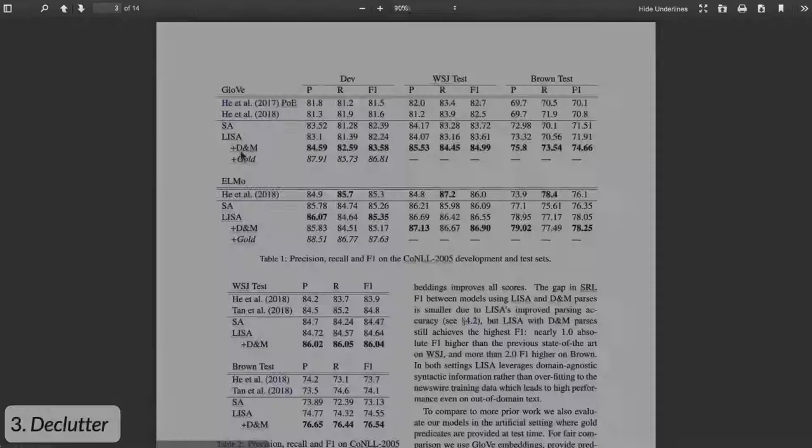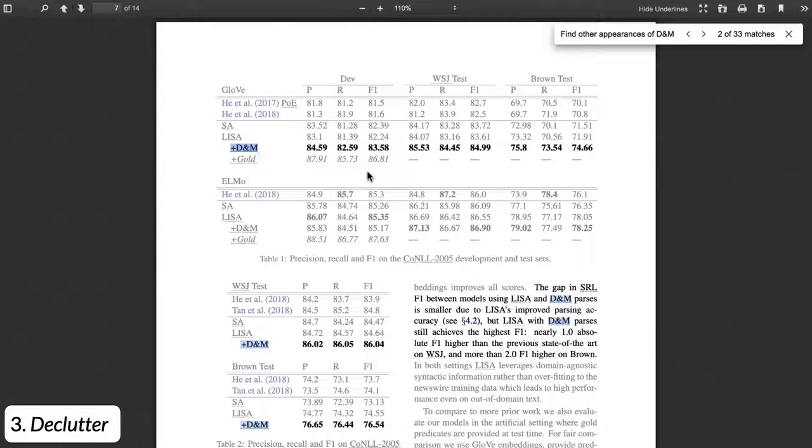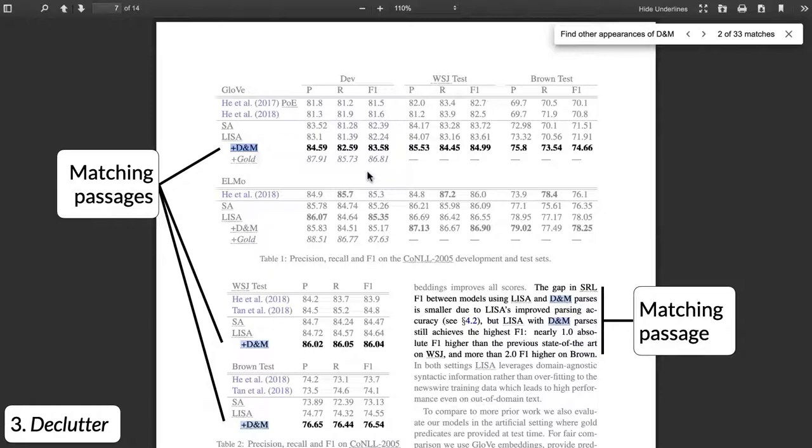The third innovation is called declutter. When a reader selects a term, Scholarfy eliminates visual clutter to help readers scan the paper for usages. It does this by highlighting segments of text that contain matches and fading out the unmatched sentences.